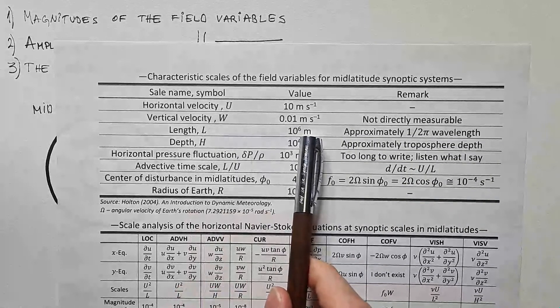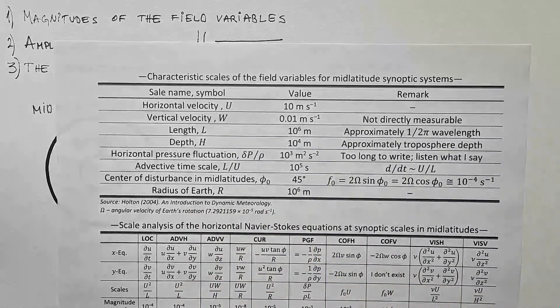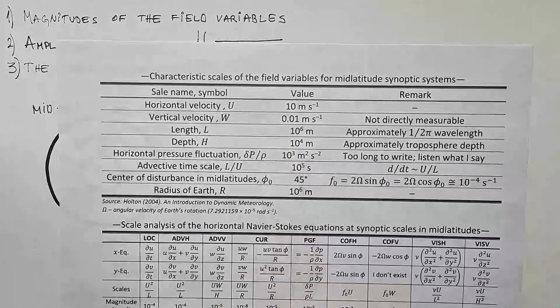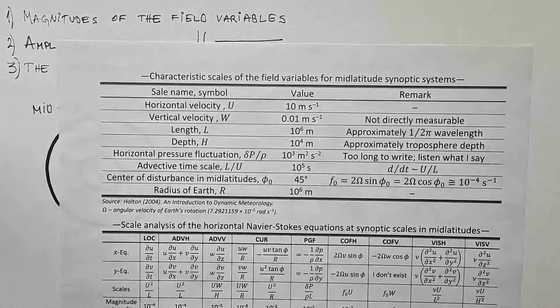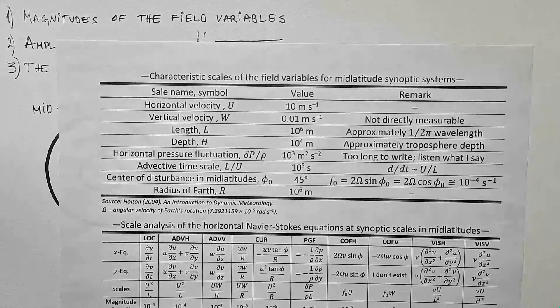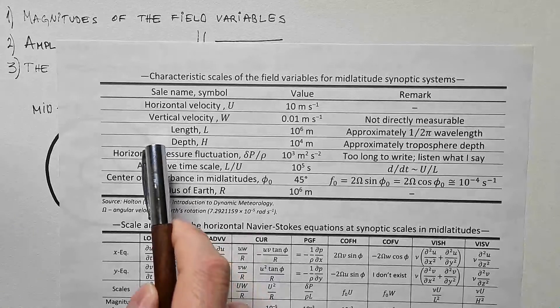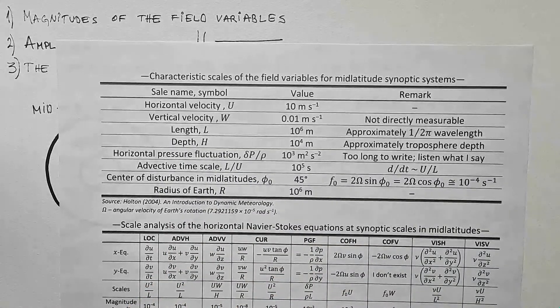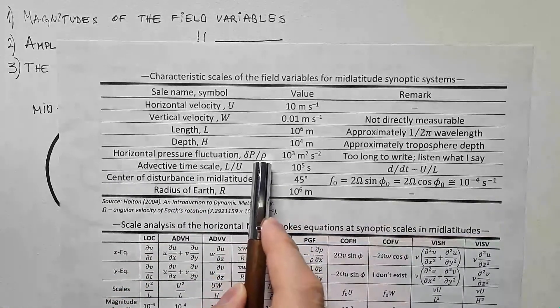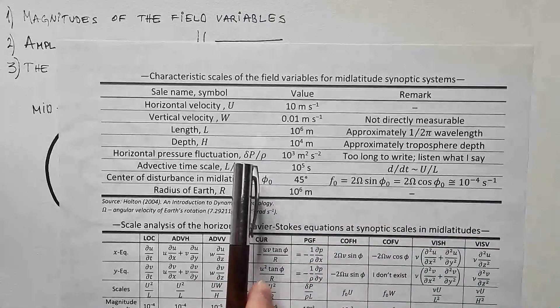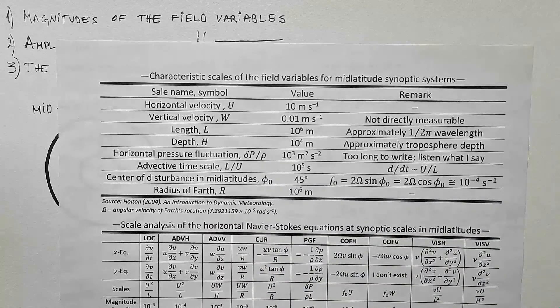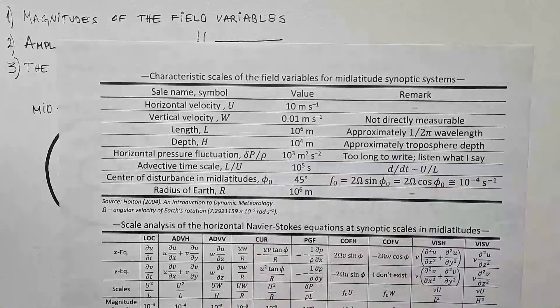Length scale, I again argued from a previous page, that it's approximately 1,000 km. Depth scale is troposphere. And troposphere is in mid-latitudes, is around 11-12 km. You can check my video on the standard atmosphere. And that's the order of magnitude 10 to the power 4. Then, horizontal pressure fluctuation has the symbol delta p over rho, where rho is density of air.